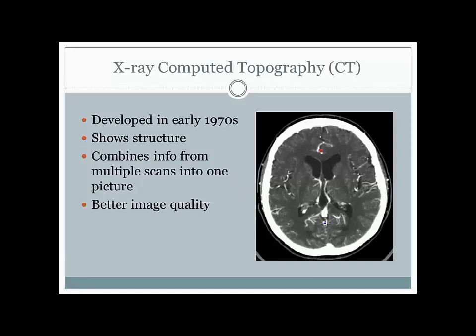In the CT image you can see the ventricles—the really dark spaces where there's actually no brain material. The really white on the outside is the skull, and in between you have all the brain matter. This is useful for locating things like tumors, if there's something growing there that shouldn't be. However, the image quality isn't great—it's hard to distinguish specific features and we don't really get the resolution needed to make fine-grained decisions.